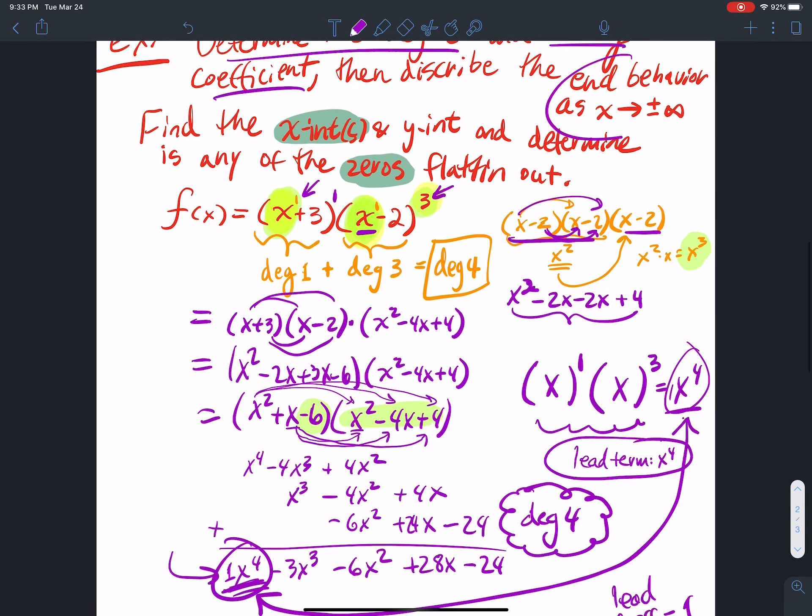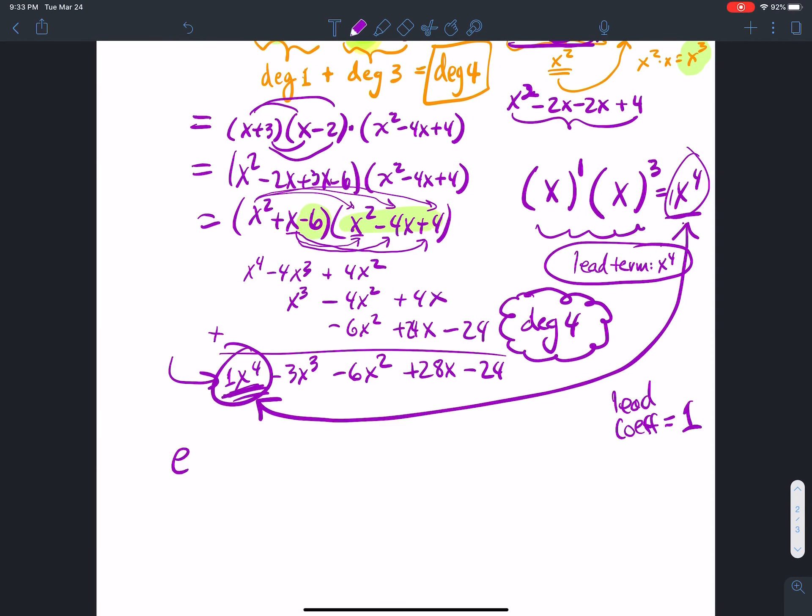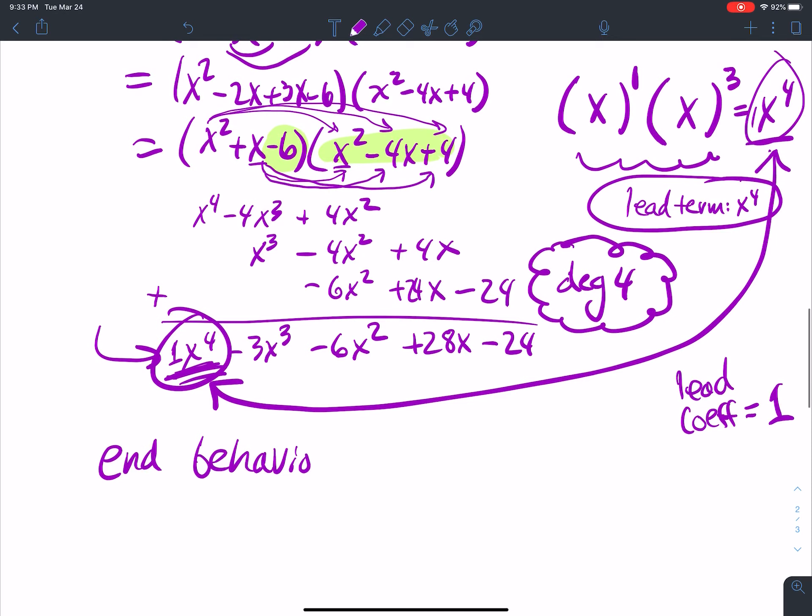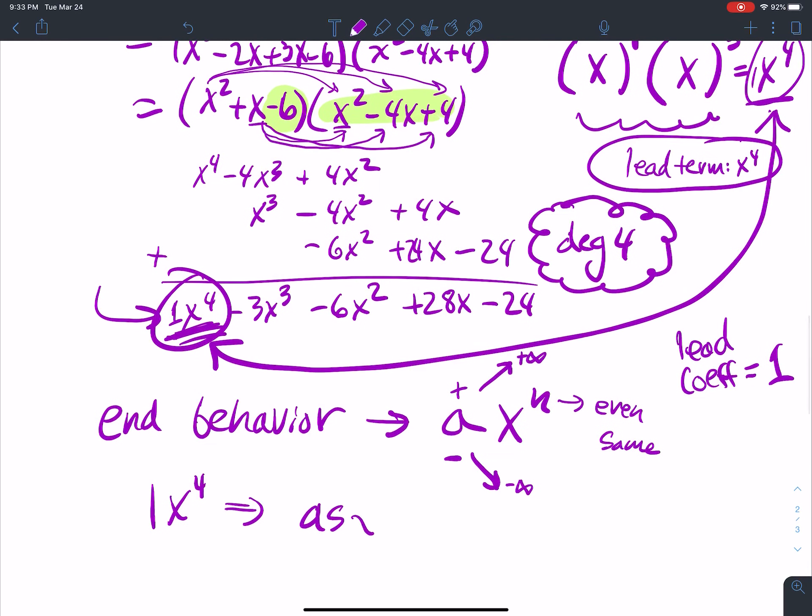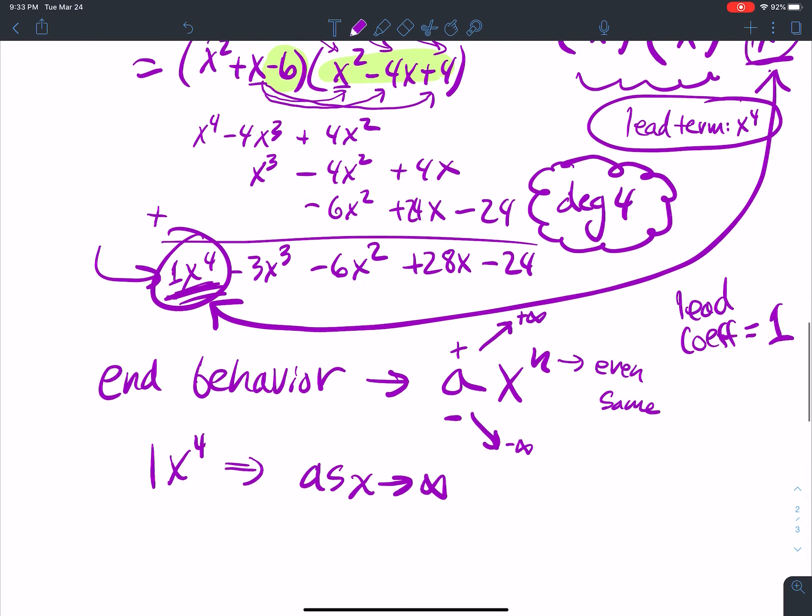Describe the end behavior. What do you know about end behavior? End behavior, what you learned from the last video, is that end behavior is determined by the lead term. If n is even, it's the same, and if a is positive, then I go up to positive infinity on the right side. If it's negative, I go down to negative infinity on the right side. Right-hand behavior. So for 1 x to the 4th, this is even.